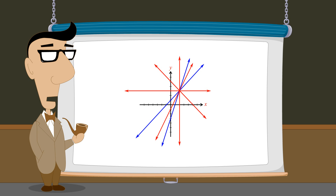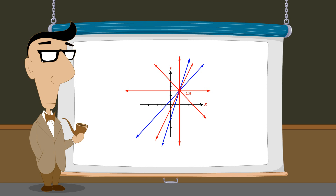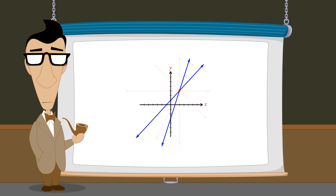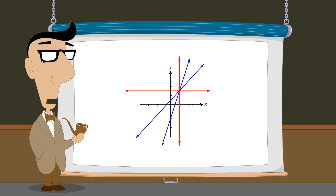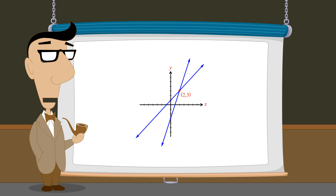By choosing various multipliers before adding the two equations, we can produce a new line with any orientation we like. However, no matter which multipliers we choose, the resulting line will always cross the two original lines at their intersection point and thus share the solution common to the two original equations. To find the coordinates of the intersection point of two lines, we choose multipliers for the equations that will cause the line produced by adding them to be either vertical or horizontal. The equation of this line then tells us the intersection point's x-coordinate or y-coordinate. This is the basis for solving a system of equations using the elimination method. In the next lecture, we will examine other relationships which can occur between two linear equations which do not share a single common solution.